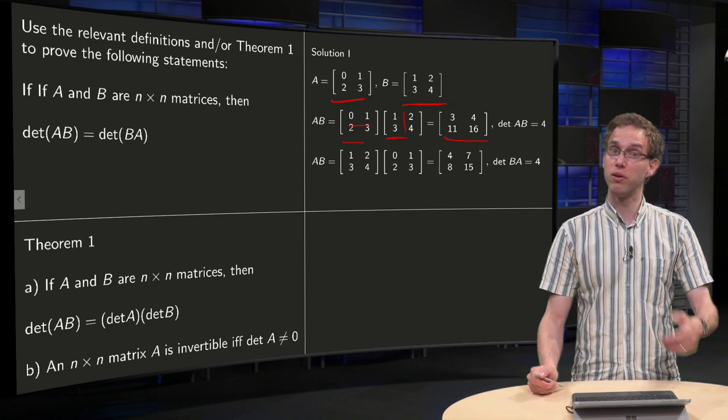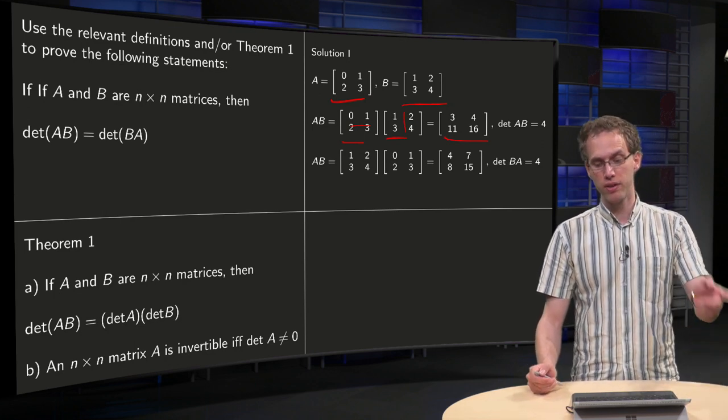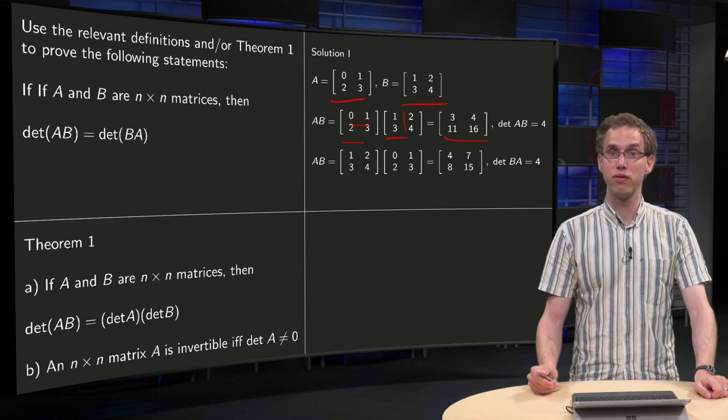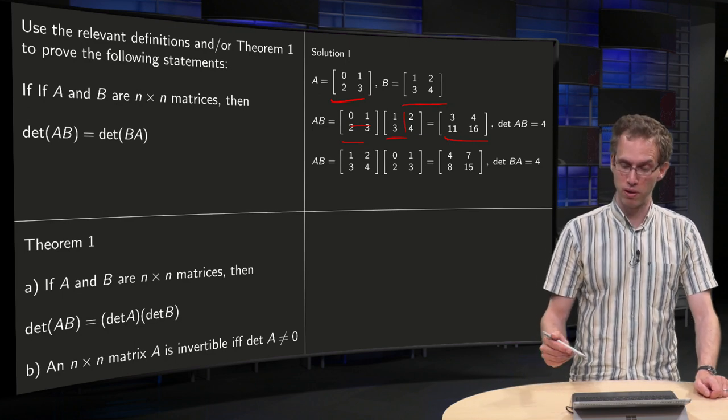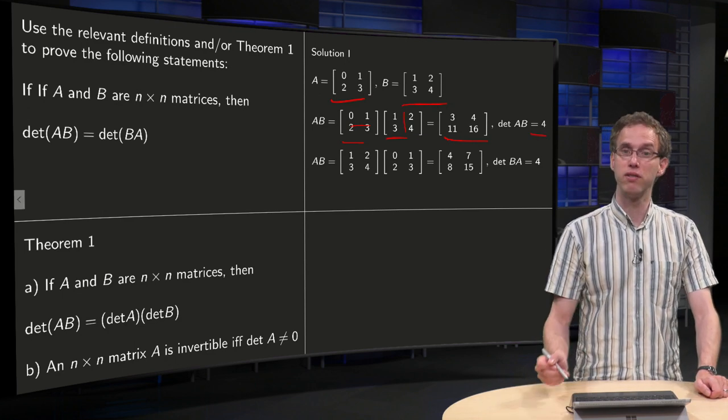4 plus 12 equals 16. So there you have your AB. You can compute the determinant, 3 times 16 minus 4 times 11, 48 minus 44 equals 4. So det(AB) equals 4.